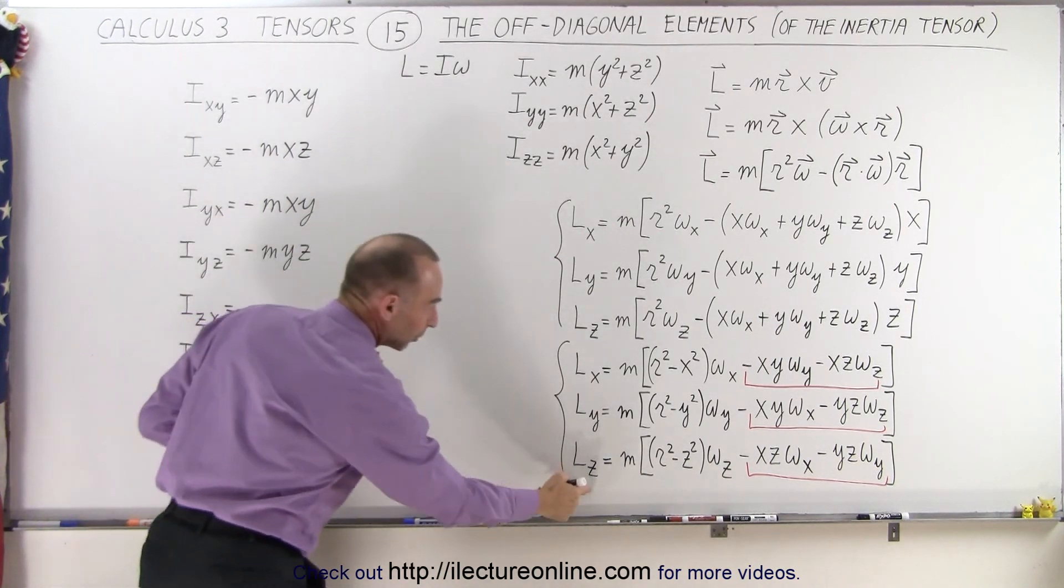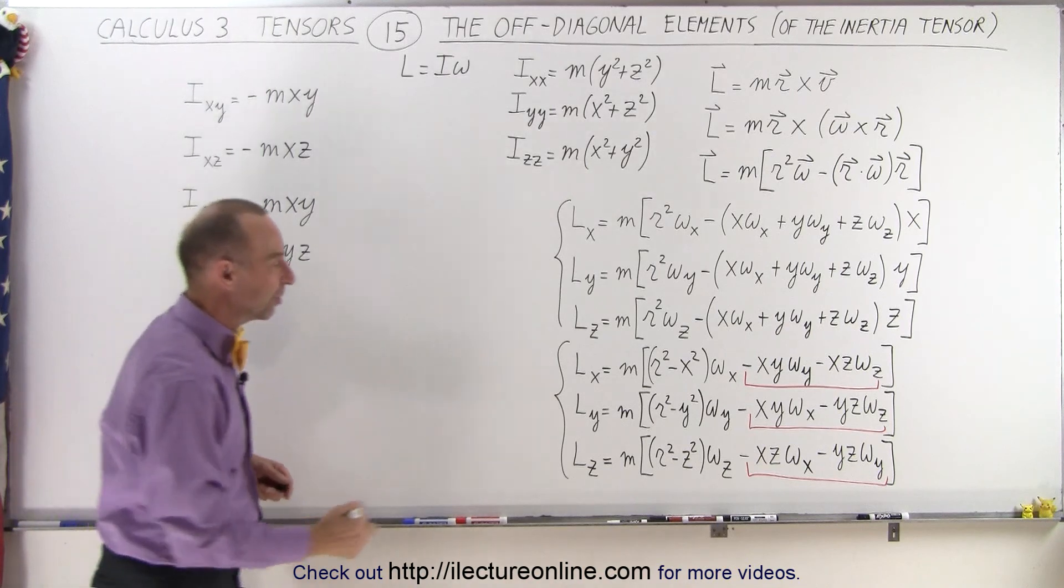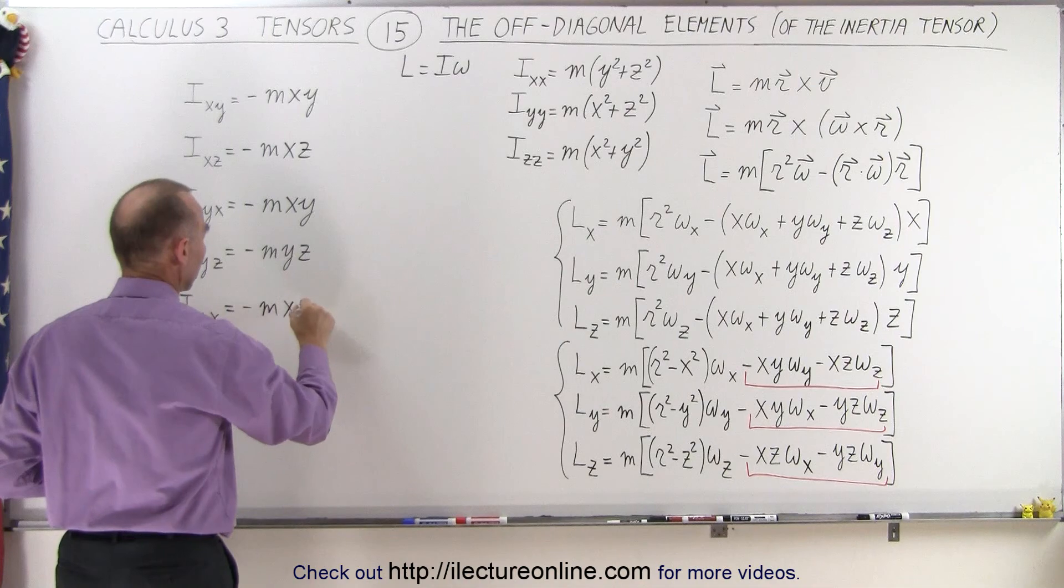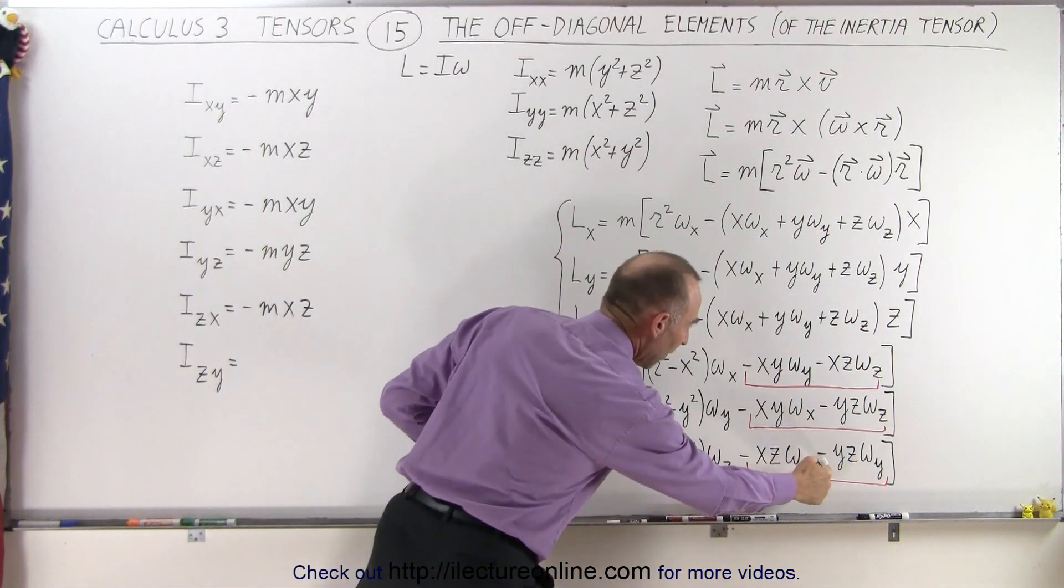And finally, we take the moment of inertia about the z-axis and we have m times a minus xz. And here we have an m times a minus yz.